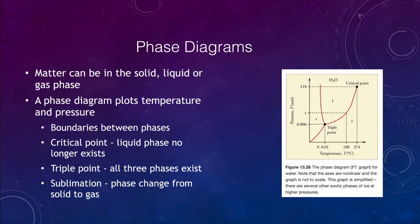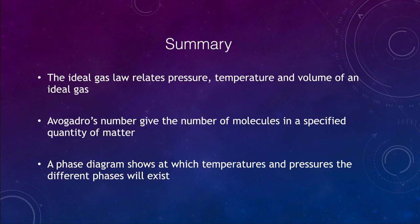Let's go ahead and summarize and finish up this section of the lecture. We talked about the ideal gas law, which related the pressure, the temperature, and the volume of an ideal gas. We talked about Avogadro's number, which gives the number of molecules in a specified quantity of matter. Then we finished up looking at phase diagrams, which show what temperatures and pressures the different phases—solid, liquid, and gas—will exist. That concludes this lecture on the ideal gas law. We'll be back again next time for another topic in physical science. Until then, have a great day everyone and I will see you in class.